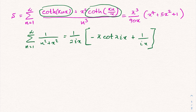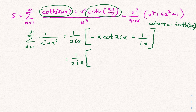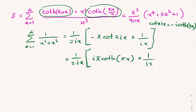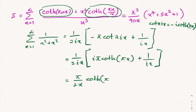We know that cotangent of pi times ix equals negative i times hyperbolic cotangent of pi x. So we can write: 1 over 2ix times, now minus minus gives plus, i times pi hyperbolic cotangent of pi x, plus 1 over ix. Then multiplying by 1 over 2ix, the i cancels, so we have pi over 2x times hyperbolic cotangent of pi x, minus 1 over 2x squared.